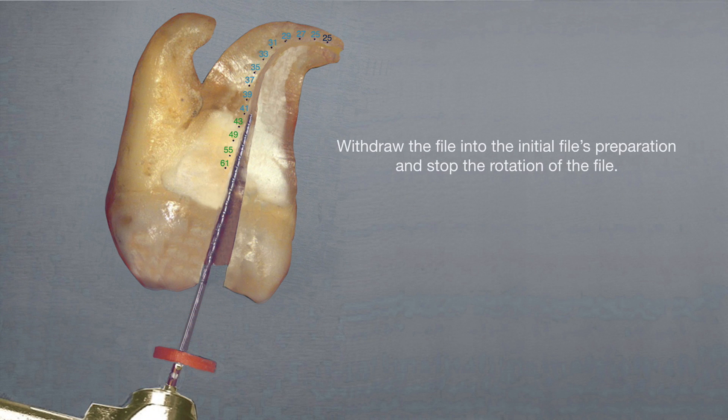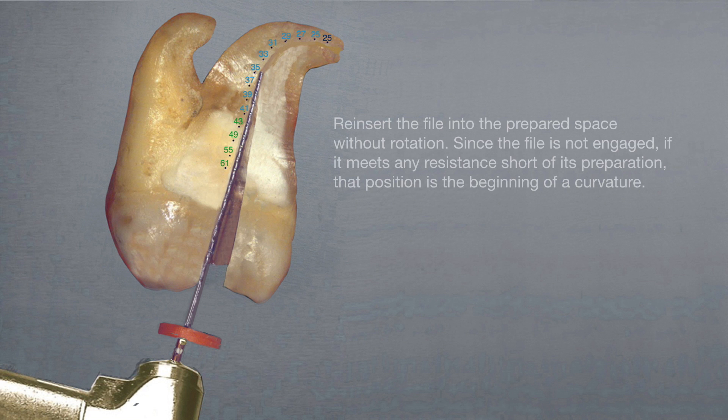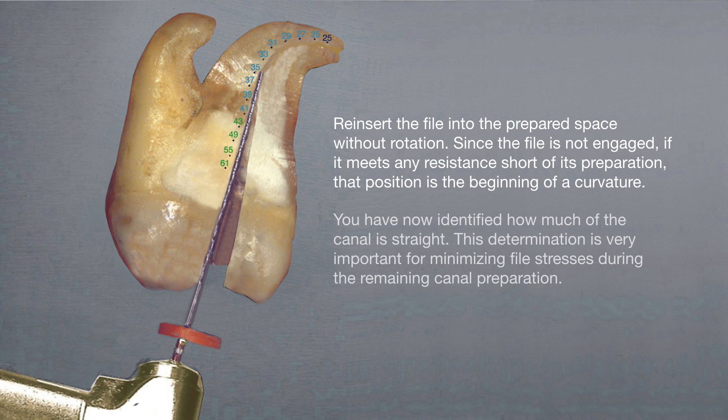Now withdraw the file into the initial file's preparation and stop the rotation of the file. Since the file isn't engaged, if it meets any resistance short of its preparation, that position is the beginning of a curvature.